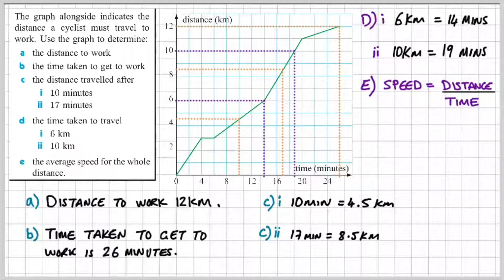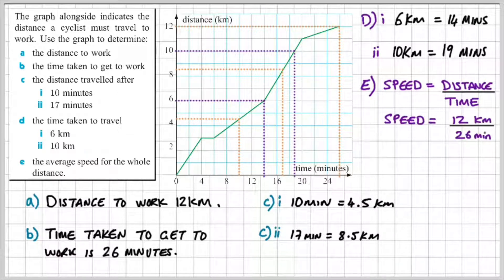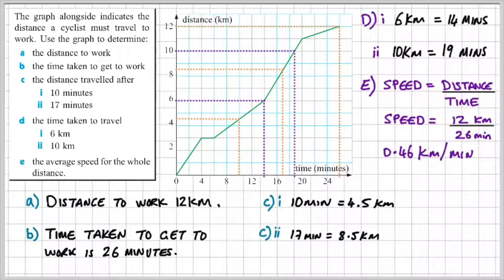So in order to find the average speed of the whole distance, we need to find the total distance divided by the total time. So in parts A and B, I worked out the total distance and the total time taken. So I can do speed is equal to 12 kilometres divided by 26 minutes. Now if I worked that out on a calculator, I would get 0.46 kilometres per minute.